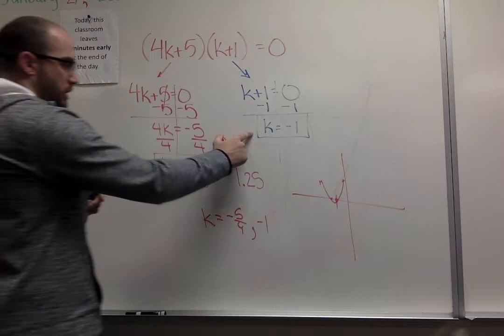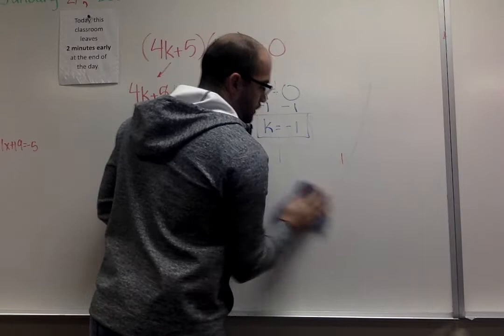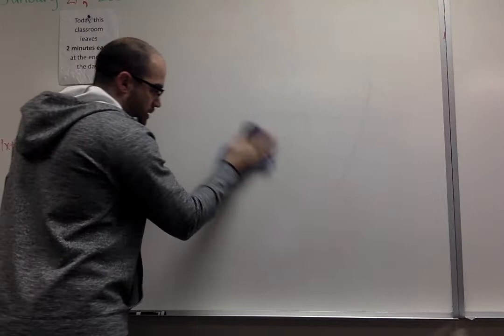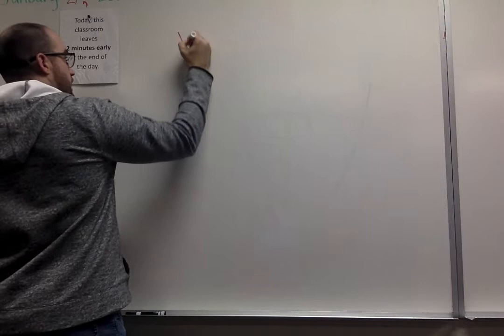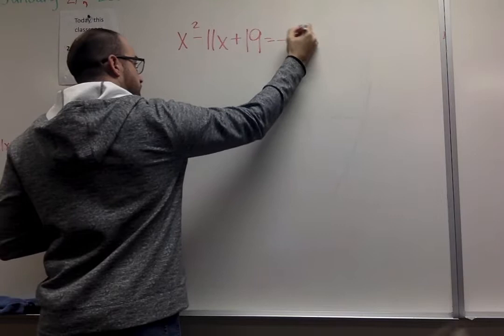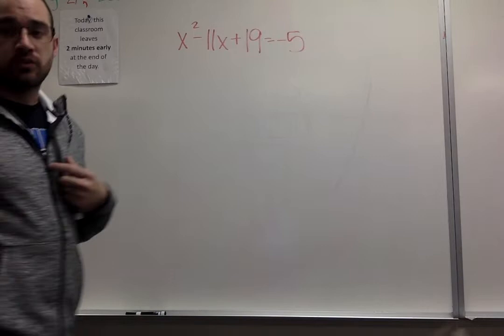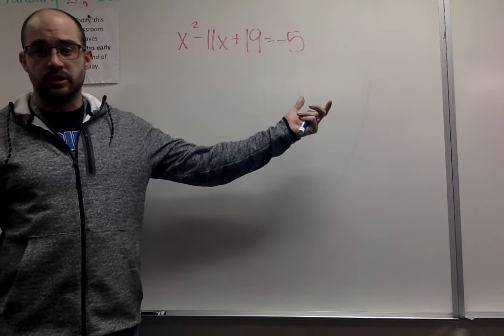The second example is one where I'm going to show you from the start, our factoring steps into our solving. This is one that might look a little bit funky. We've got x squared minus 11x plus 19 equals negative 5. The first thing that I have to look for is, is this thing set equal to 0? We need it equal to 0 for us to be able to factor.